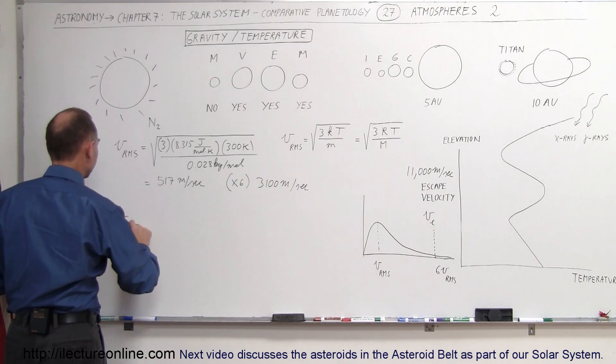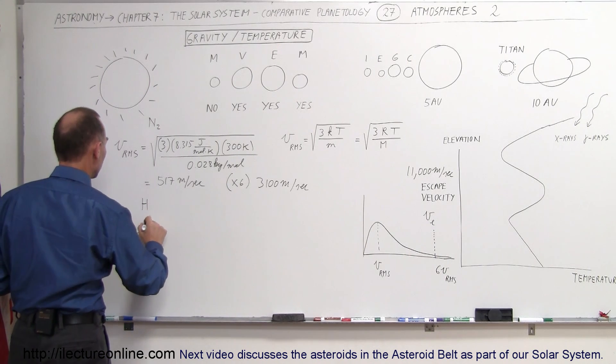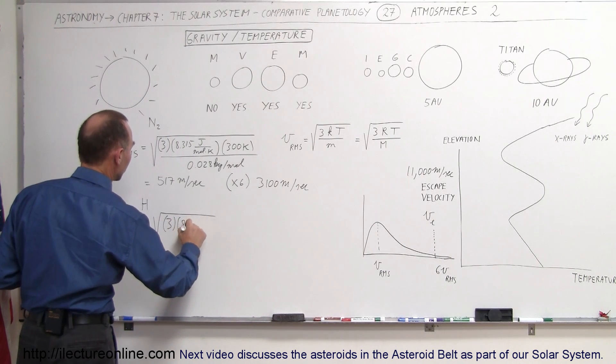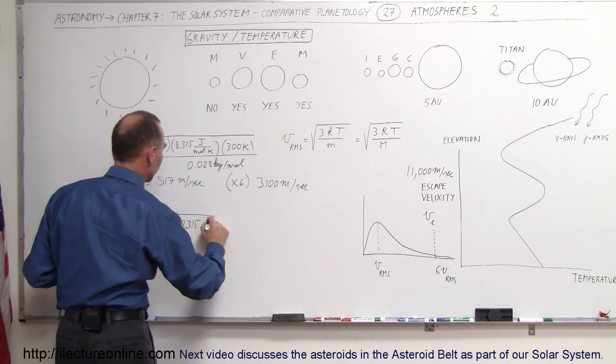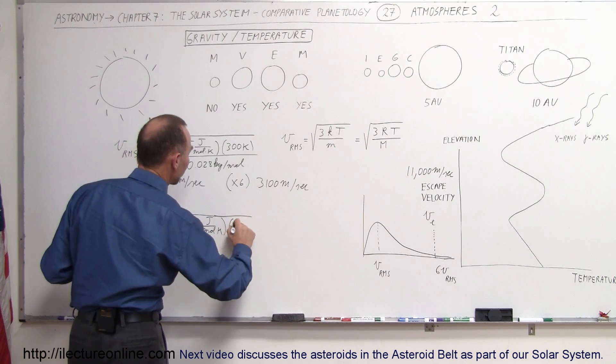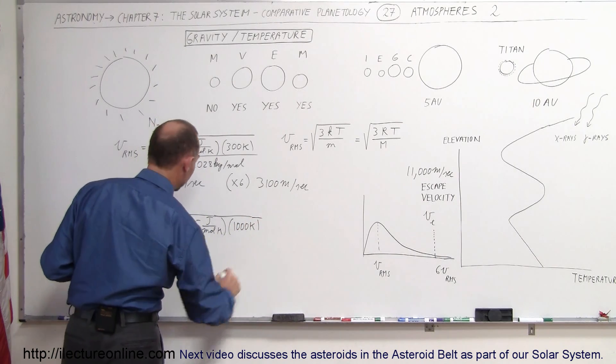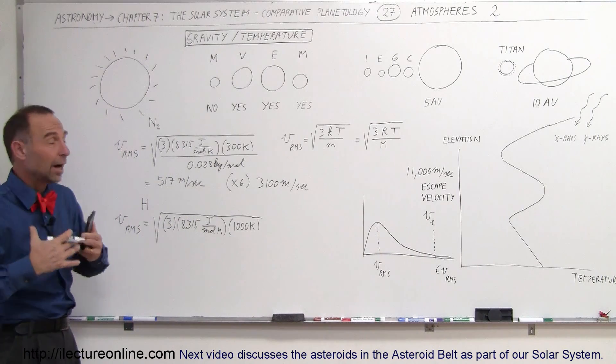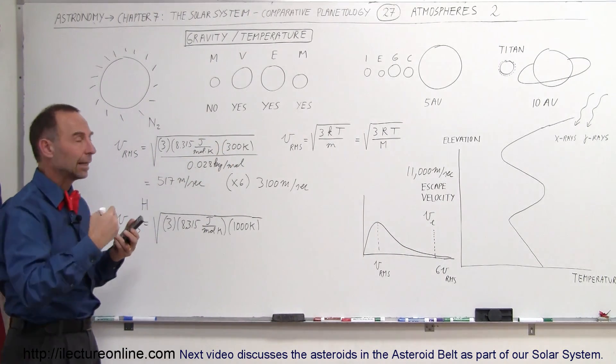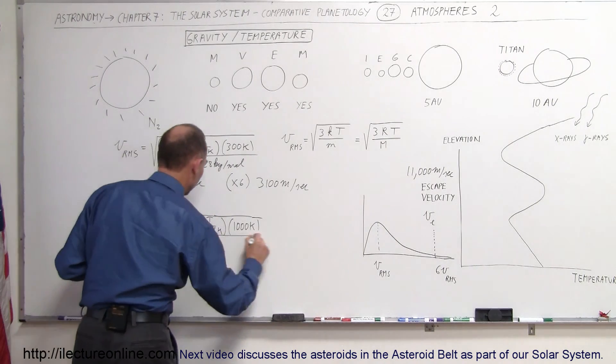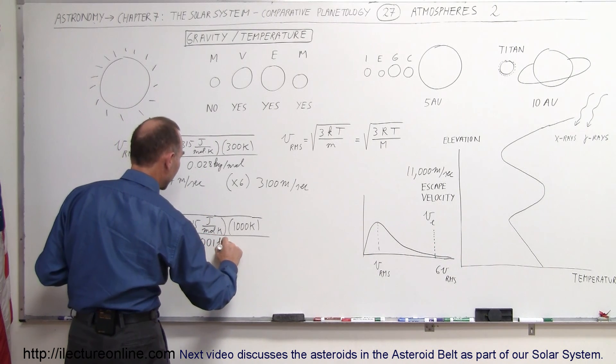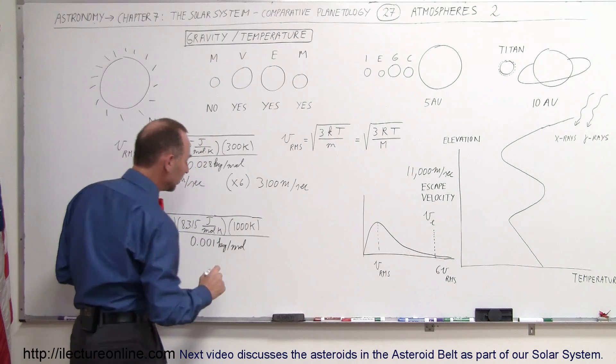So, let's say that the VRMS for a single hydrogen atom would be equal to the square root of 3 times 8.315 joules per mole times Kelvin, multiply times the temperature, let's say 1,000 Kelvin. And it could get even hotter than that up there, relatively speaking. It's not that you go up there and it's really hot, you go up there and the molecules are moving really fast, that then give you an equivalent, very high molecular temperature.